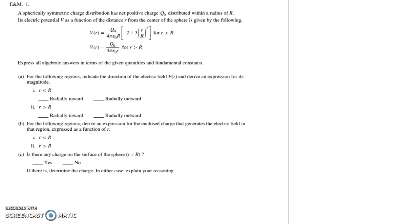So part A says indicate the direction of the electric field and derive an expression for its magnitude. What I thought to myself was what is the relationship between these equations for potential and electric field? One of the things we learned that came to mind is that electric field is the negative derivative of potential.